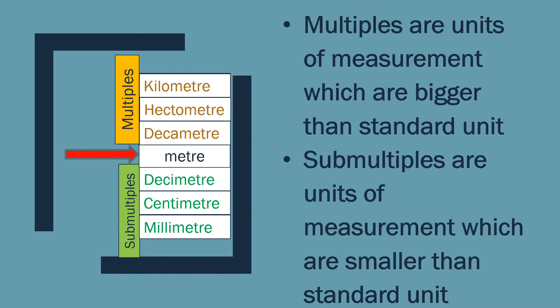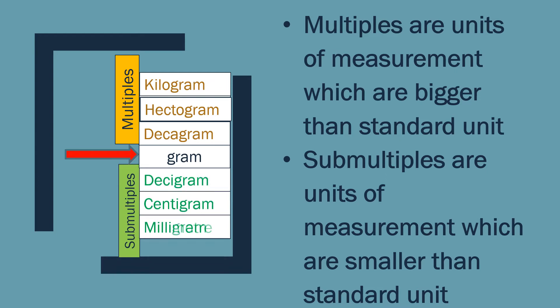There are many more units of length too, like foot and gauge. Similarly, for measurement of mass the standard unit is gram. The multiples are decagram, hectogram, and kilogram, and the submultiples are decigram, centigram, and milligram. For weights greater than a kilogram we also use quintal and ton. So there are many more units — all of these are used to measure mass.